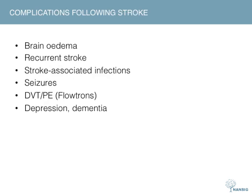Once a patient has suffered an acute stroke they are at risk of several complications. Brain oedema is managed surgically using hemicraniectomy. Other complications are medical and should be managed urgently as they can alter prognosis. Prevention of complications includes the use of flowtrons or intermittent pneumatic compression to prevent DVT or PE. TED stockings are not used following acute stroke.